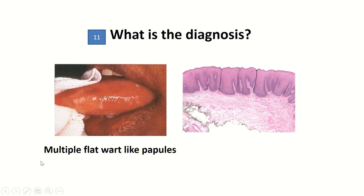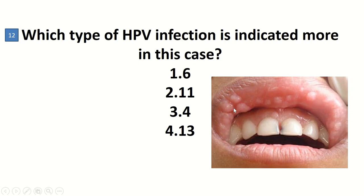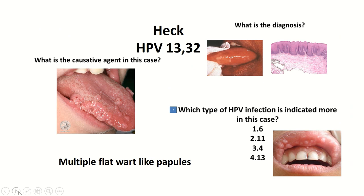What is the diagnosis? There are multiple flat wart-like papules on the tongue, and histopathology confirms this finding. The diagnosis is Heck's disease. Here is another case of Heck's disease with involvement of the lip area. The causative agents for this disease are HPV types 13 and 32. So the correct answer here is 4.